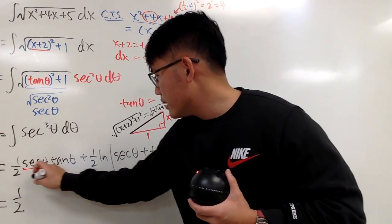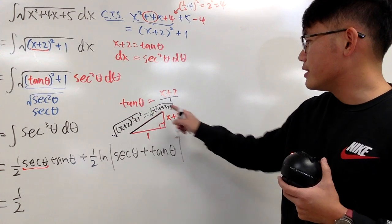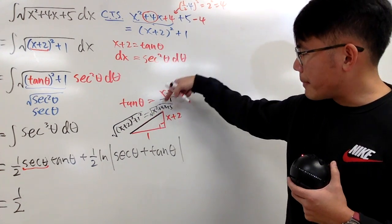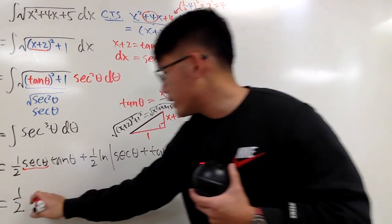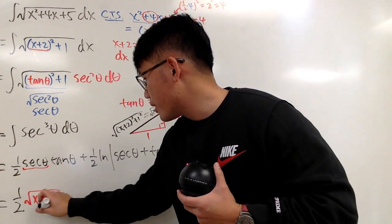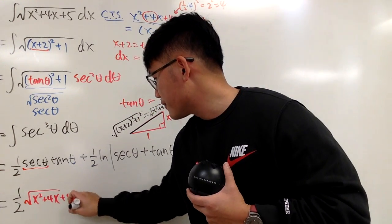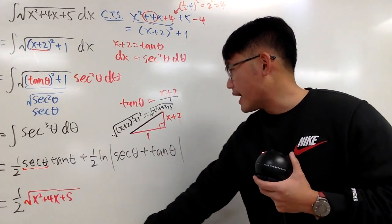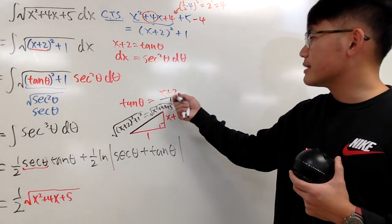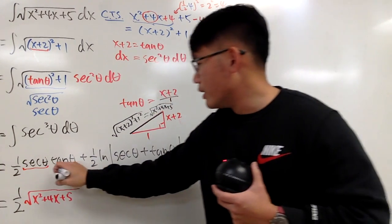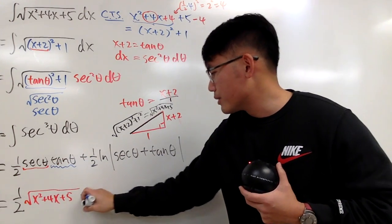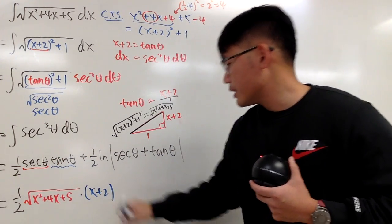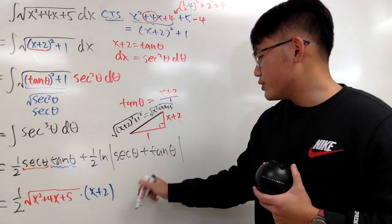And then secant theta, by looking at this triangle, is the hypotenuse over adjacent. So it's just this. So I'll write down. Square root of x squared plus 4x plus 5. And we also have to multiply by tangent theta. And tangent theta is x plus 2. Right? So this part is just x plus 2. So multiply by x plus 2. All right. And that's pretty much the idea.